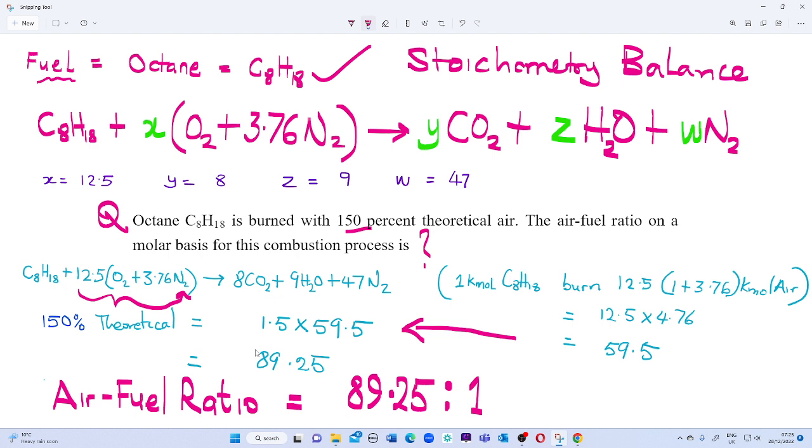By balancing the fuel and air under this combustion process, we can find out that X becomes 12.5, Y becomes 8, Z becomes 9, and W becomes 47.